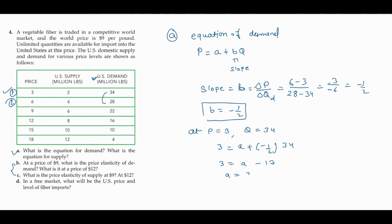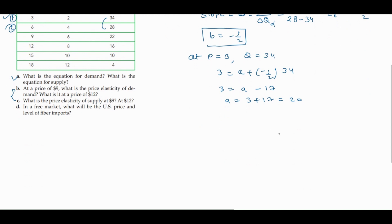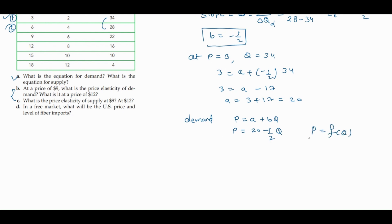From here we get the intercept: 3 plus 17 equals 20. So the demand equation is p equals 20 minus (1/2)q. This is the inverse demand equation — when we write the equation with p as a function of q, we call it the inverse demand function. To find the demand equation, multiply through by 2: 2p equals 40 minus q, so q equals 40 minus 2p. This is the demand equation for this data.